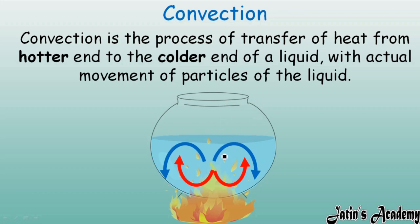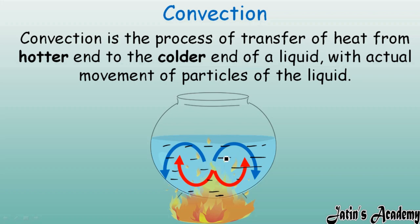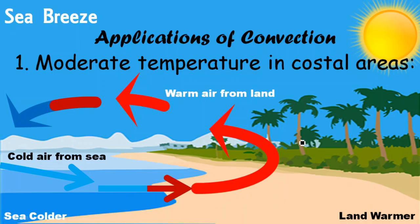In a beaker filled with liquid, particles near the flame take heat and become hot, making them lighter and causing them to move upward. This sends cooler particles downward toward the flame. Those cooler particles then become hot and also rise up. This cycle continues, setting up a convection current in the liquid, which heats the full liquid. Convection is thus the process of transfer of heat from the hotter end to the colder end of a liquid with actual movement of particles.